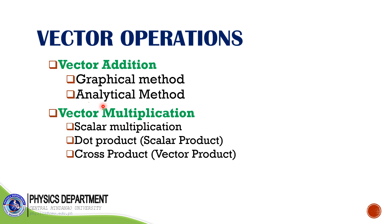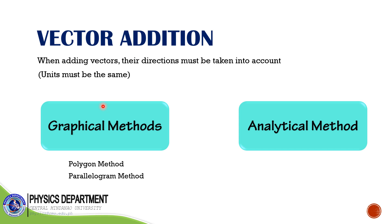Let's now go to vector operations. There are two operations: vector addition and vector multiplication. For vector addition, we have graphical and analytical methods. For vector multiplication, there are three: scalar multiplication, dot product, and cross product. When adding vectors, their directions must be taken into account and units must be the same. There are two methods in adding vectors: graphical methods and analytical methods.